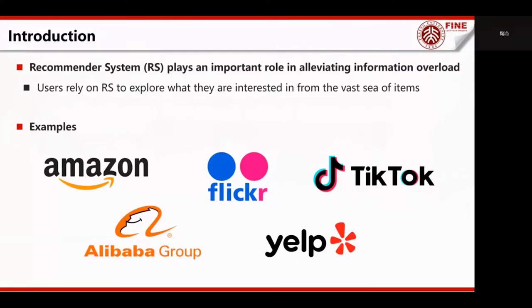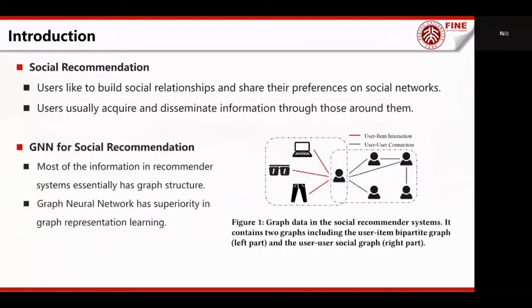Collaborative filtering is the most widely used technique in recommender systems, featuring user and item embeddings based on historical user interactions. It assumes that behaviorally similar users would exhibit similar preferences on items. However, as most users only have limited behavioral data, models that only rely on historical interactions suffer from the data sparsity issue.